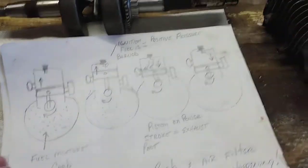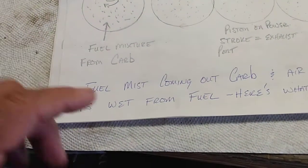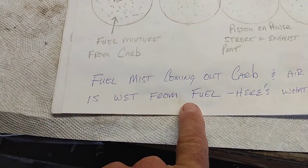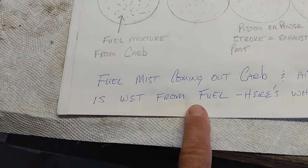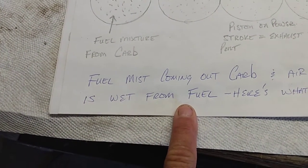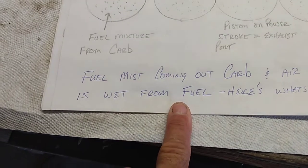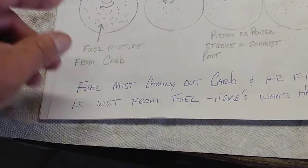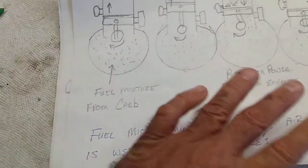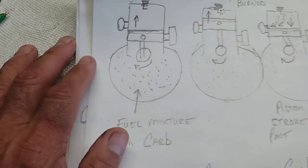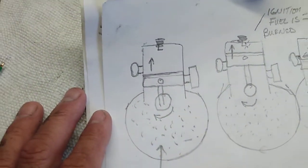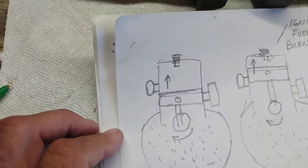So here is the symptom: fuel mist is coming out of the carb and the air filter is wet from the fuel. This is on a two-stroke, okay? And the way that I do my exact precise drawings - I'll show you on here and then I'll move over and show you what's going on with the jug and the piston.